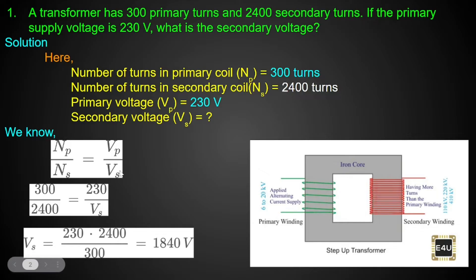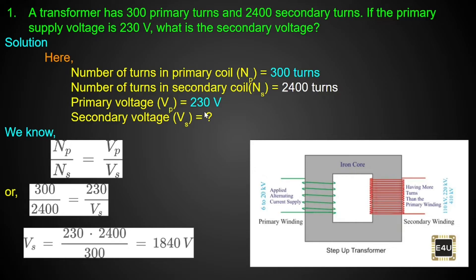In this question, Np is 300, Ns is 2400, Vp is 230, and Vs is unknown. We back-calculate: Vs equals Vp multiplied by Ns divided by Np. So 300 is divided and 2400 is multiplied — simple mathematics.